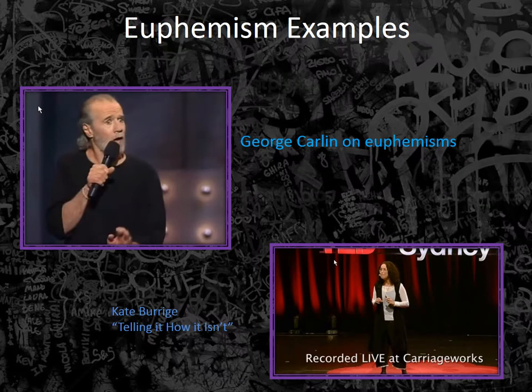There are two great video examples linked here. The first is a George Carlin piece — the more humorous of the two. The second is a TED talk by Kate Burridge, which goes into more detail about the processes involved in generating euphemisms. Especially interesting is the explanation of why there are so many bad words: when a euphemism substitutes for a bad word, it is considered okay for a while, but then it too becomes a bad word requiring a new euphemism, and so on.